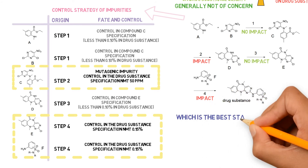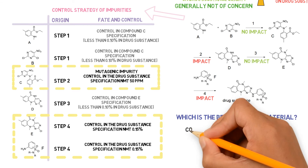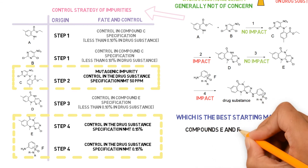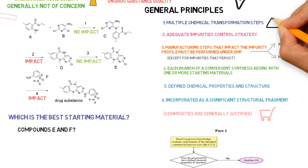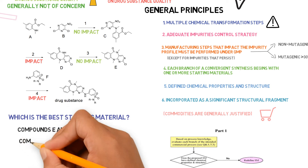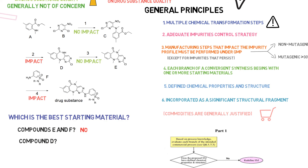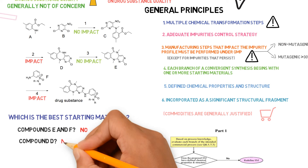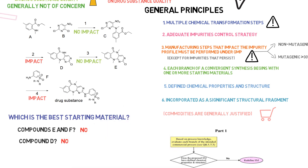Which would be the best starting material in this case? Could we consider compounds E and F as starting materials? This would not be possible because the first rule is already not satisfied — only one chemical transformation step separates them from the drug substance. What about compound D? More than one chemical transformation step separates it from the drug substance, and the control strategy for impurities was shown to be adequate. However, the step immediately upstream of the proposed starting material should not impact the impurity profile. In this case, step 2 was shown to impact the impurity profile, which is immediately upstream of compound D. So this would not be an appropriate starting material.